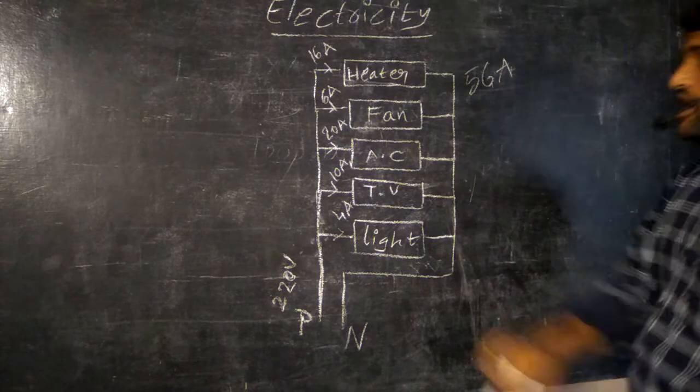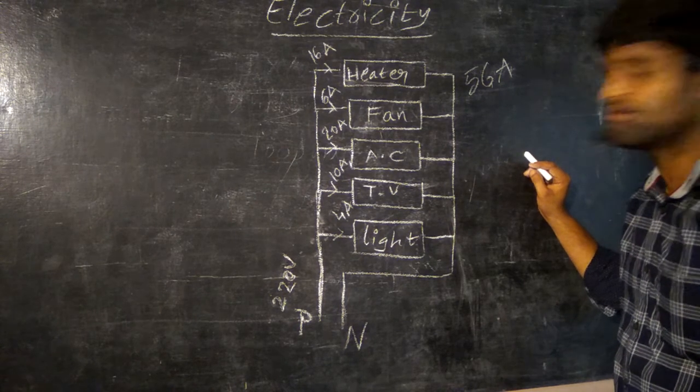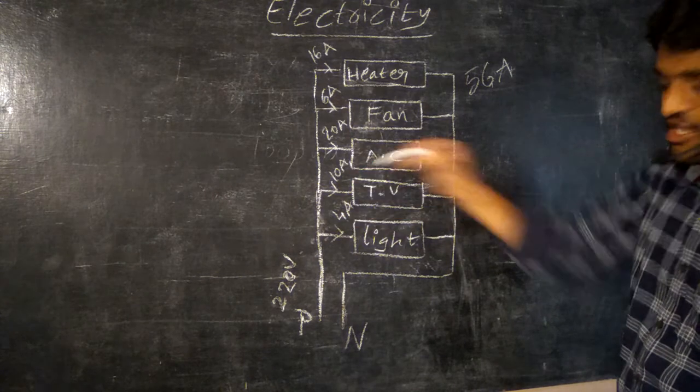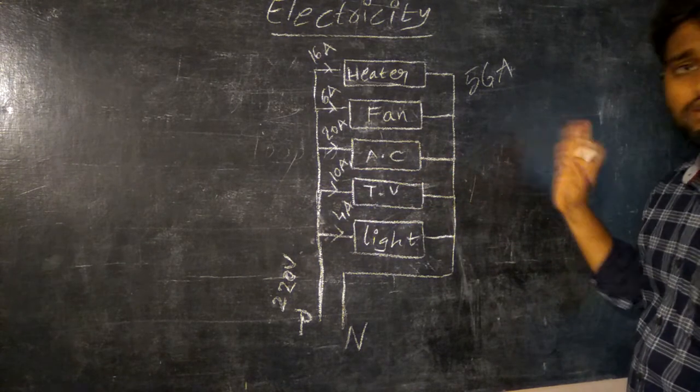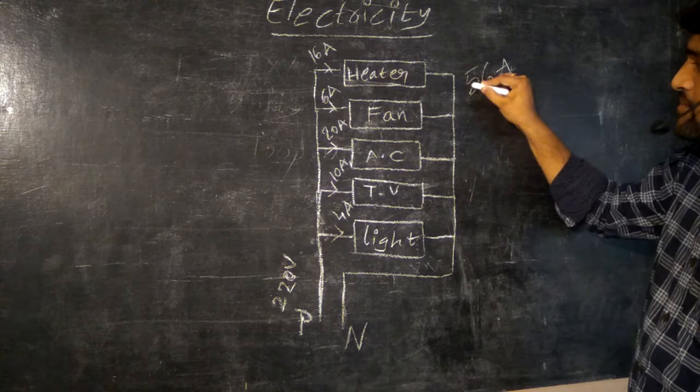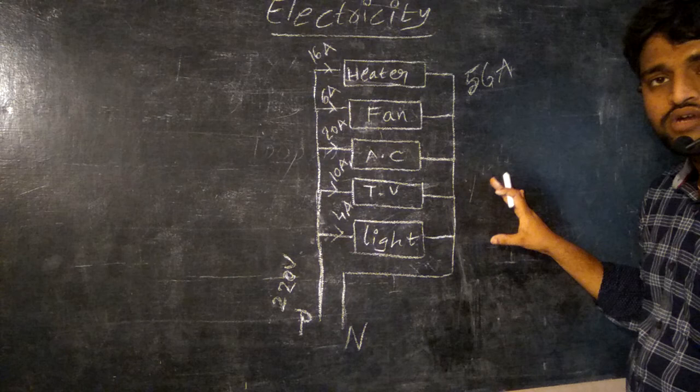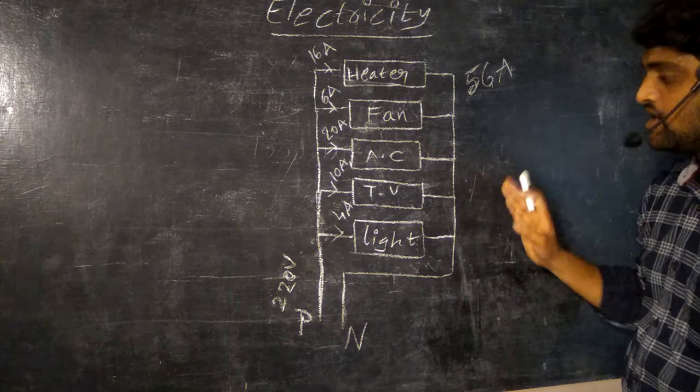So the voltage for household should be same. That should be based on the location. So 56 amperes current is flowing through the devices which are in the household.